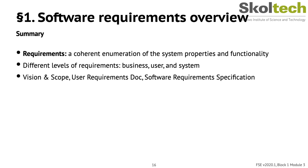To sum up: requirements are a structured enumeration of system properties and functionality. There exist different levels of requirements — business, user, and system requirements — typically written as standardized requirement documentation including a vision and scope document for business requirements, a user requirements document in free form, and a software requirements specification for user and system requirements.